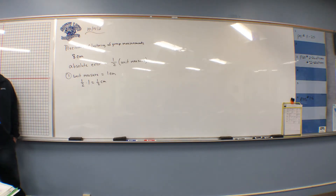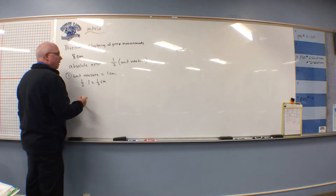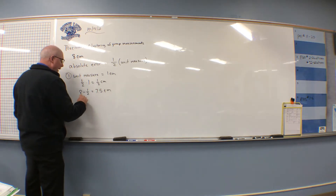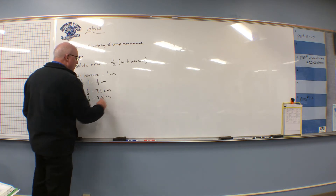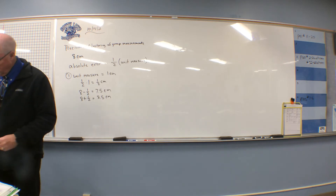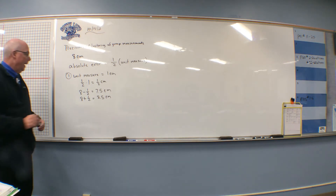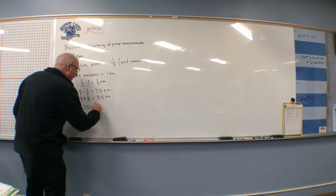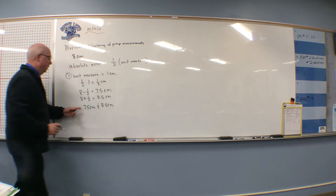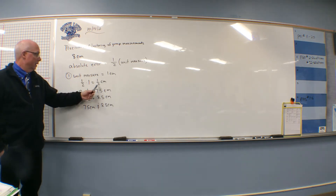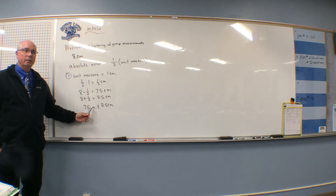What do we do with that absolute error? We take the eight centimeters and subtract the one-half, giving us 7.5 centimeters. Then we add it to the eight centimeters, giving us 8.5 centimeters. So the absolute error means we can be anywhere between 7.5 centimeters and 8.5 centimeters, and the segment would be approximately eight centimeters.